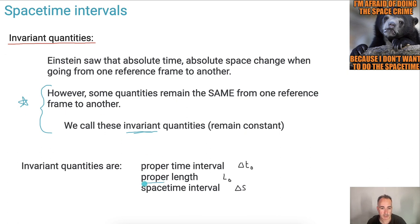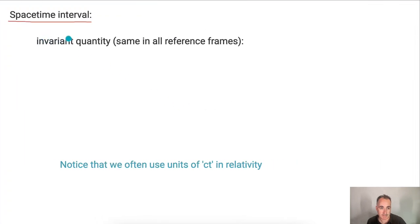So this is this invariant quantity called spacetime interval. Let's investigate a little bit further. Let's work on this delta S here, this invariant quantity. Remember, we're going to call this thing delta S.